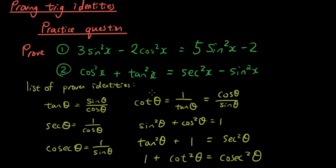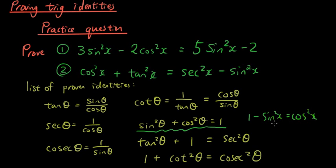You can see here that the equation that relates cos squared x and sin squared x is this one. If I rearrange this, I can change it to 1 minus sin squared x equals cos squared x. So therefore what I'm going to do is substitute this where 2 cos squared x is.